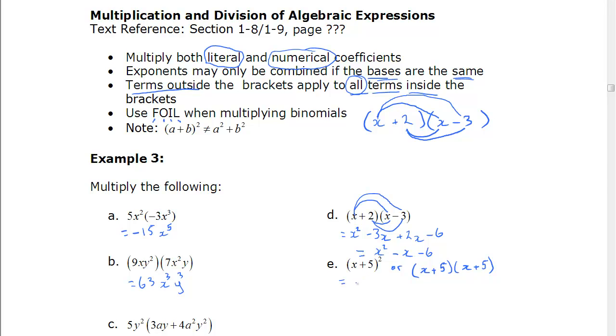So x with x, x squared. x with 5 is plus 5x. 5 with x is plus 5x. And finally 5 with 5, 25. We need to fully simplify, which means we have like terms. They both have x in them. We're adding now. So x squared, 10x plus 25.